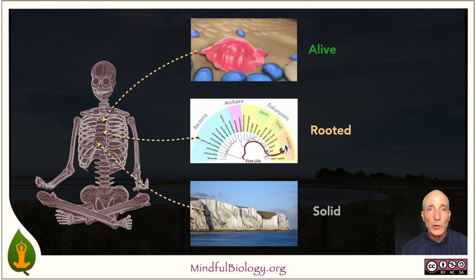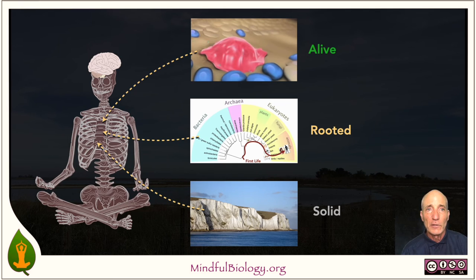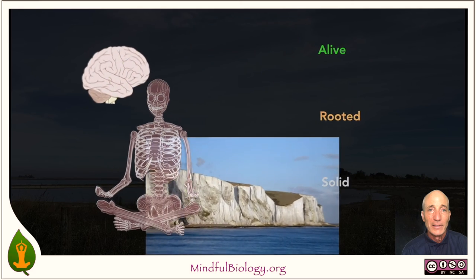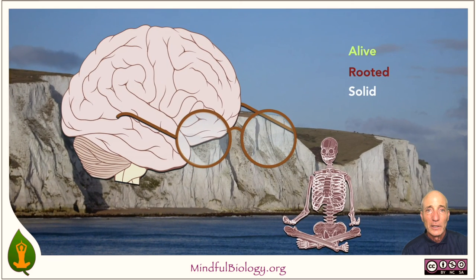We've now seen that the bone in our bodies is alive, rooted, and solid. The brain with which I'm talking and with which you're understanding is made of the same basic stuff — not as much calcium, of course, but it is just as earthly in its origin and substance, and so it too is solid and rooted and alive. We can begin to see through the illusion of separateness between mind and body, recognizing that both are mediated by tissue with very similar properties.